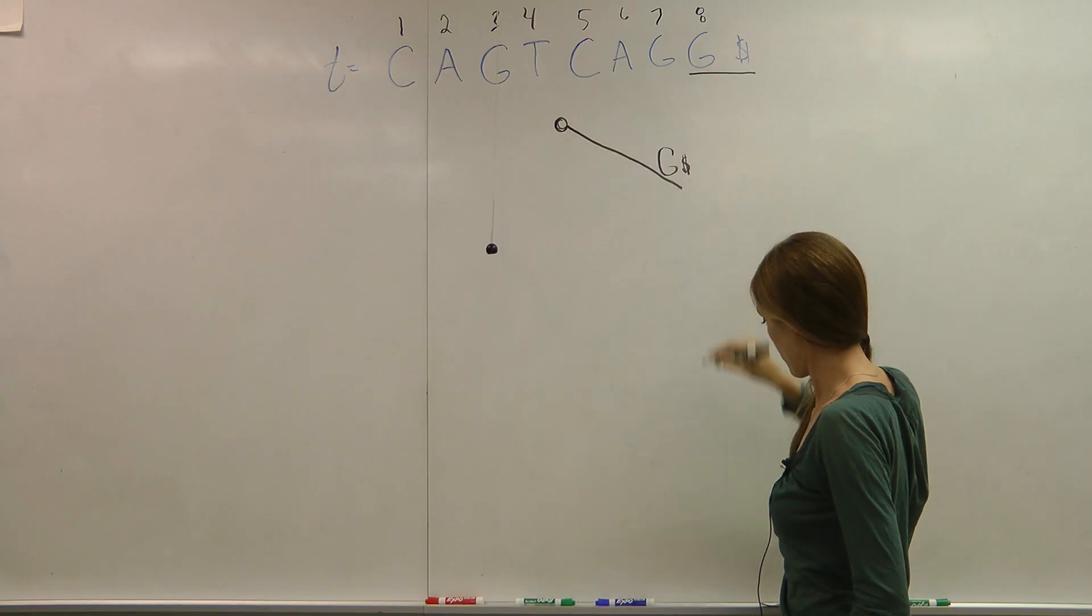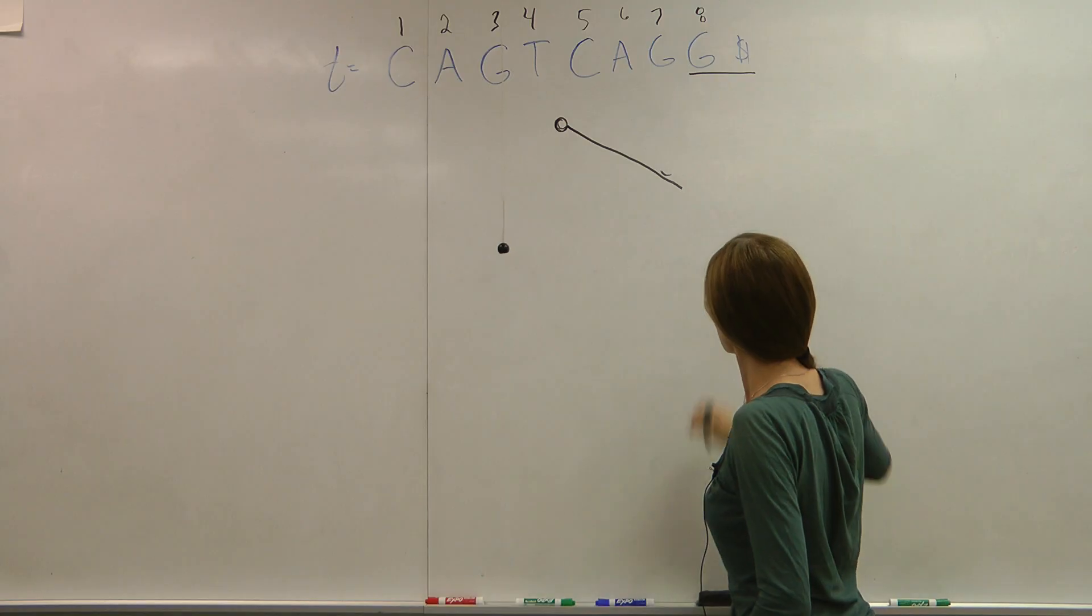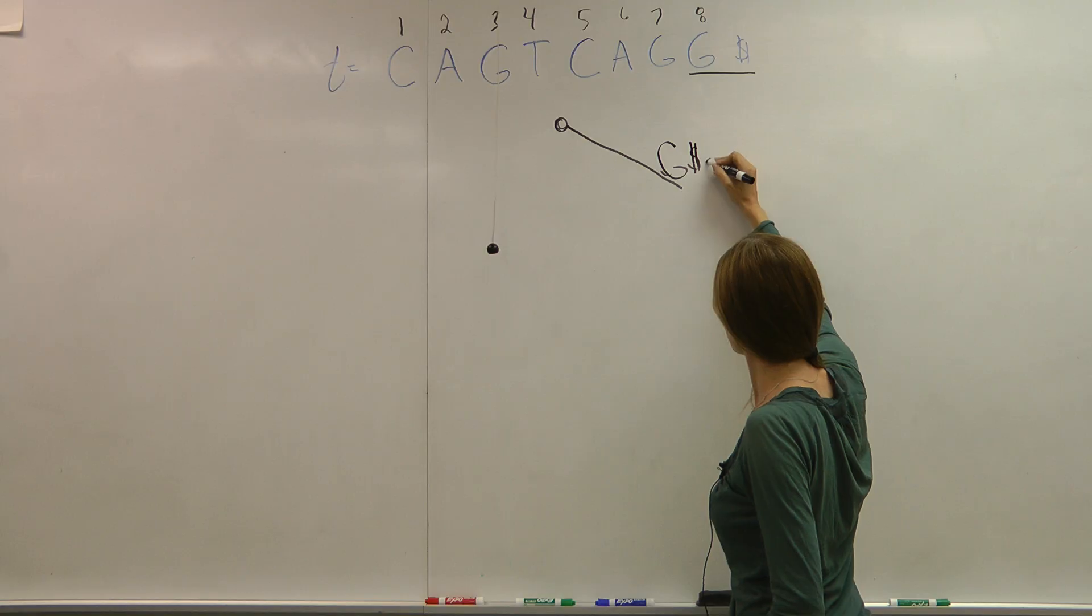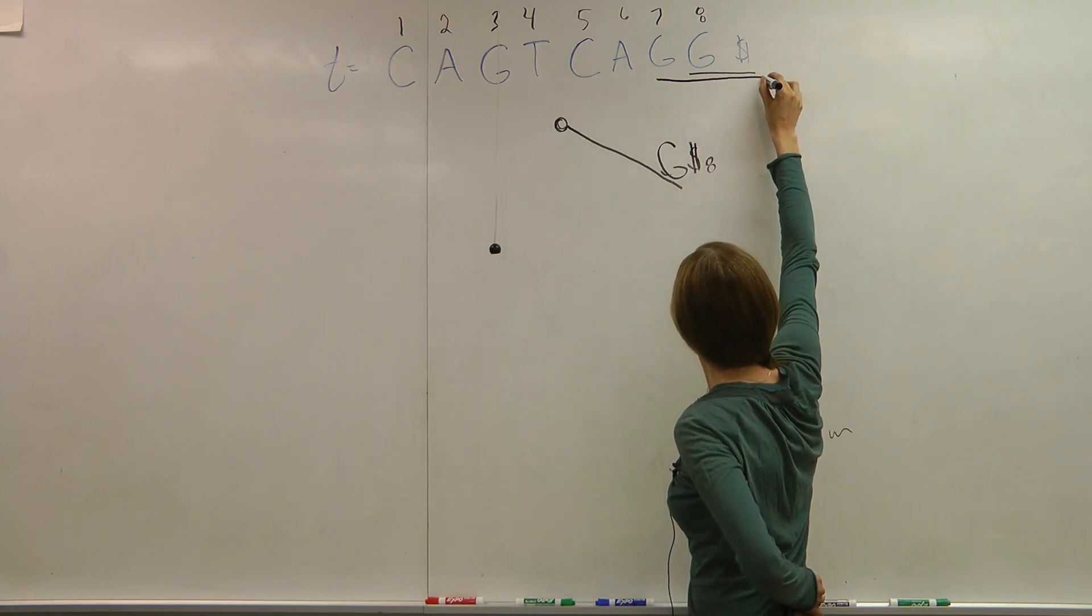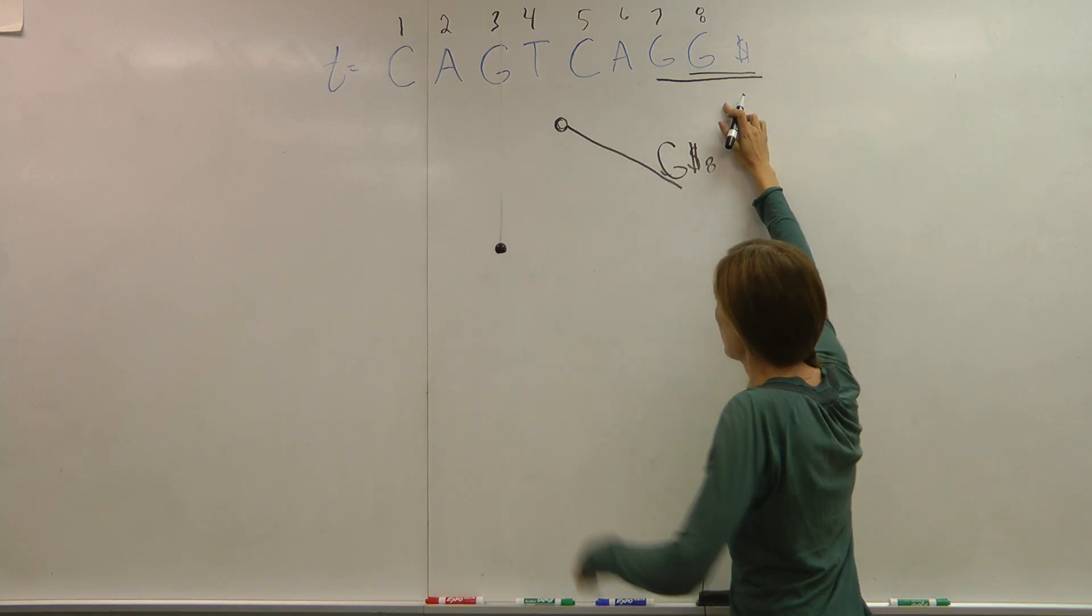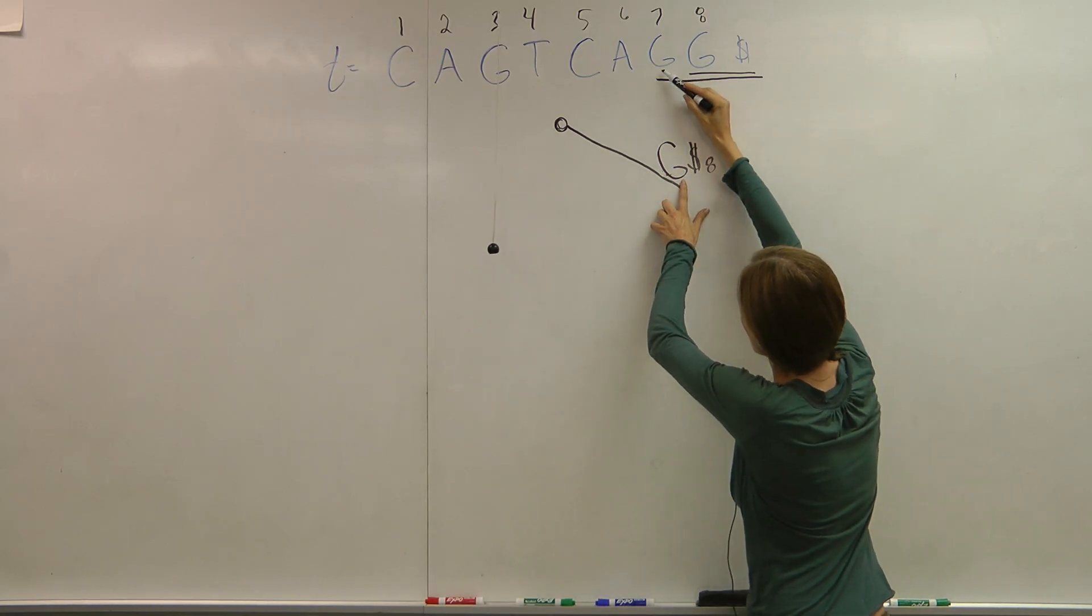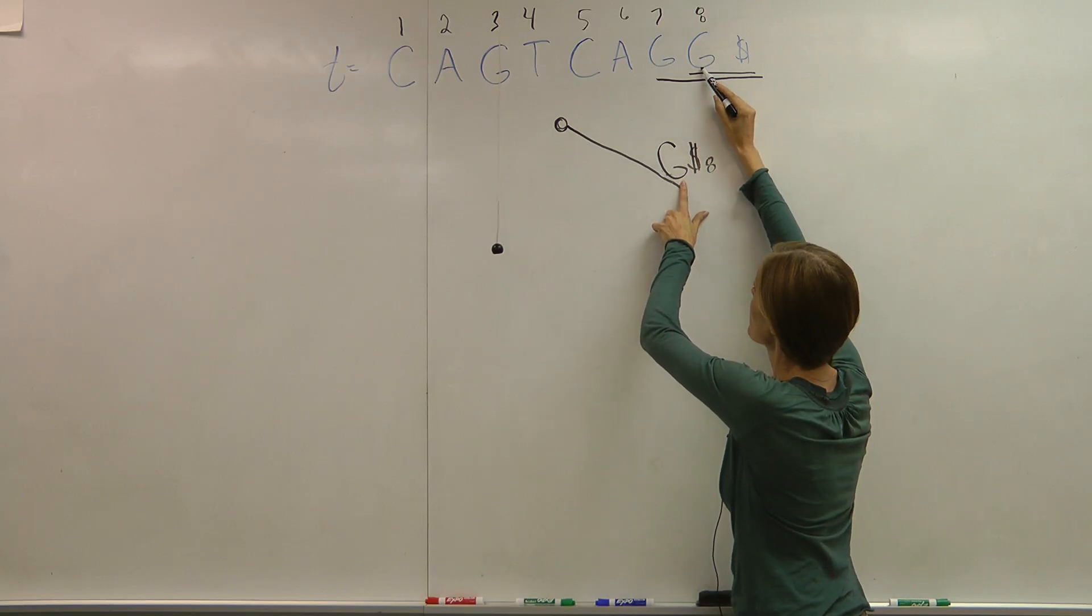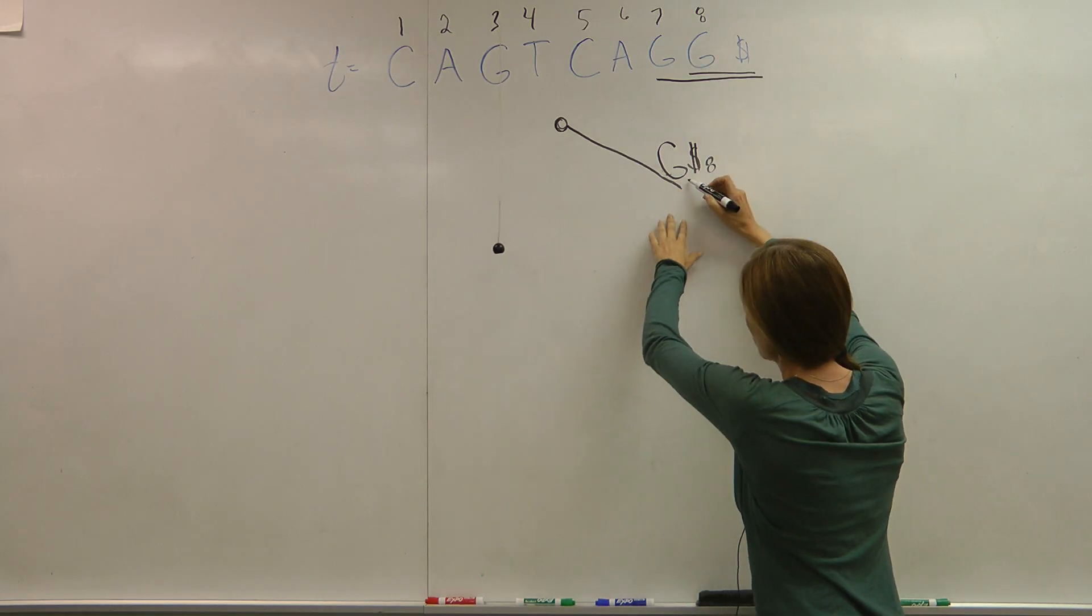So that starts at, let me make sure this is big enough for you to read. So G dollar sign, and it would start at index eight. Then I go to my next prefix, which is GG. I check to see if there exists a G already in the first branch. There does. So I'm here. And then the next nucleotide in the suffix is a G. Do I have a G off this G? Not yet.